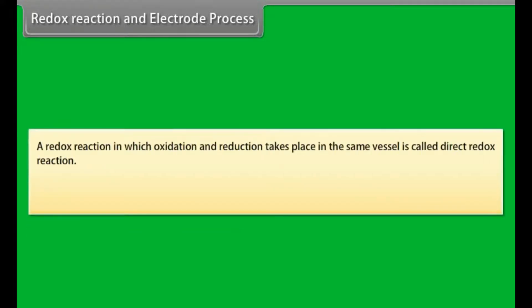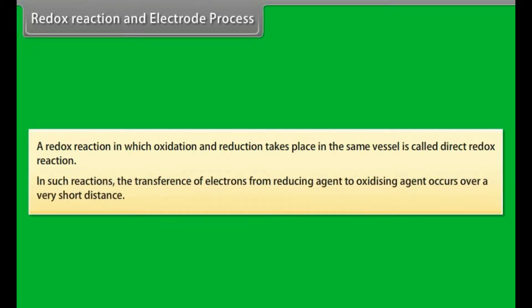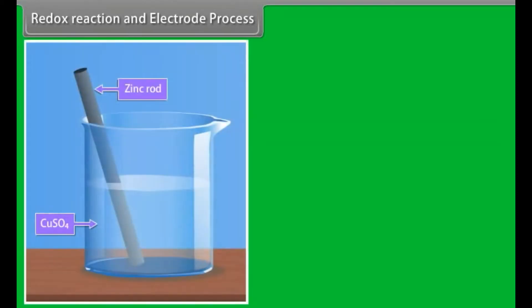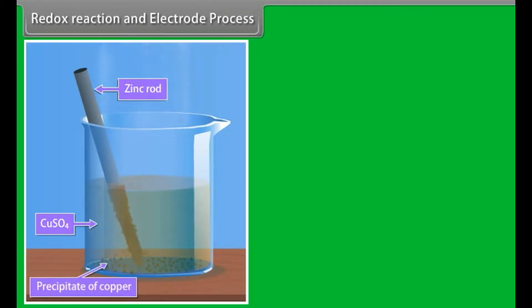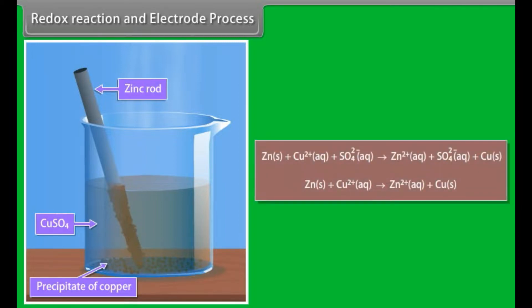A redox reaction in which oxidation and reduction take place in the same vessel is called a direct redox reaction. In such reactions, the transference of electrons from the reducing agent to the oxidizing agent occurs over a very short distance. For example, if a zinc rod is immersed in copper sulfate solution, a spontaneous reaction takes place: the zinc rod starts dissolving and loses mass, the blue color of CuSO₄ solution slowly fades, a reddish-brown precipitate of copper settles at the bottom, heat is evolved, the solution remains electrically neutral, and the reaction stops after some time.